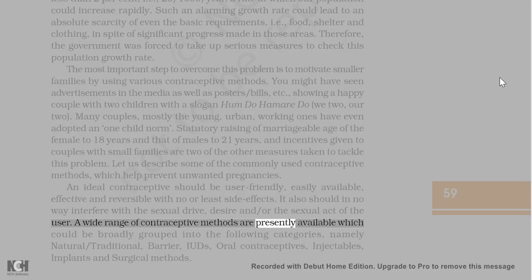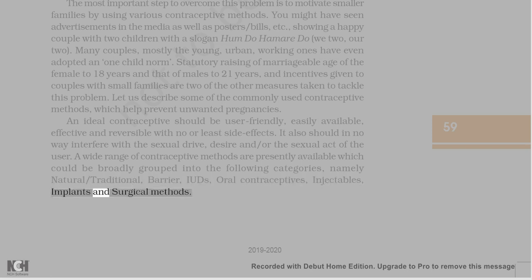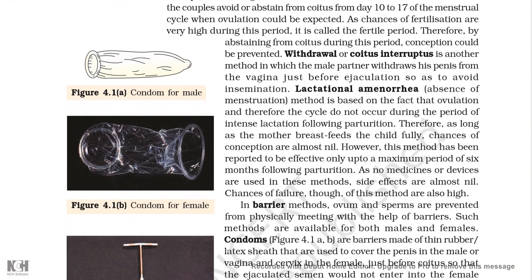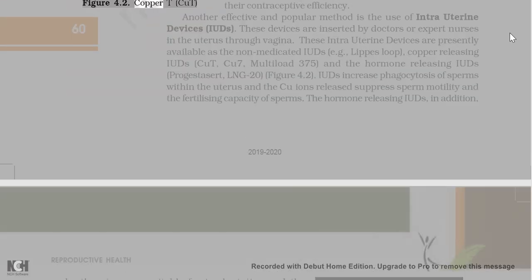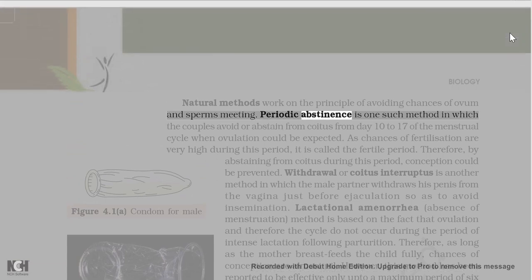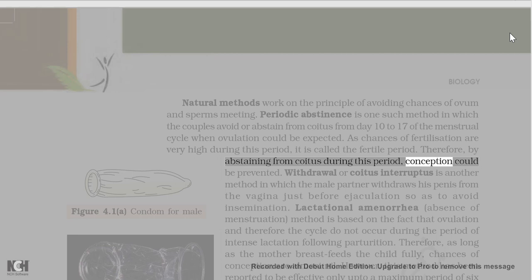Contraceptive methods are broadly grouped into: natural/traditional, barrier, IUDs, oral contraceptives, injectables, implants, and surgical methods. Natural methods work on the principle of avoiding chances of ovum and sperm meeting. Periodic abstinence is one such method in which couples abstain from coitus from day 10 to 17 of the menstrual cycle when ovulation could be expected. As chances of fertilization are very high during this period, it is called the fertile period, and by abstaining, conception could be prevented.